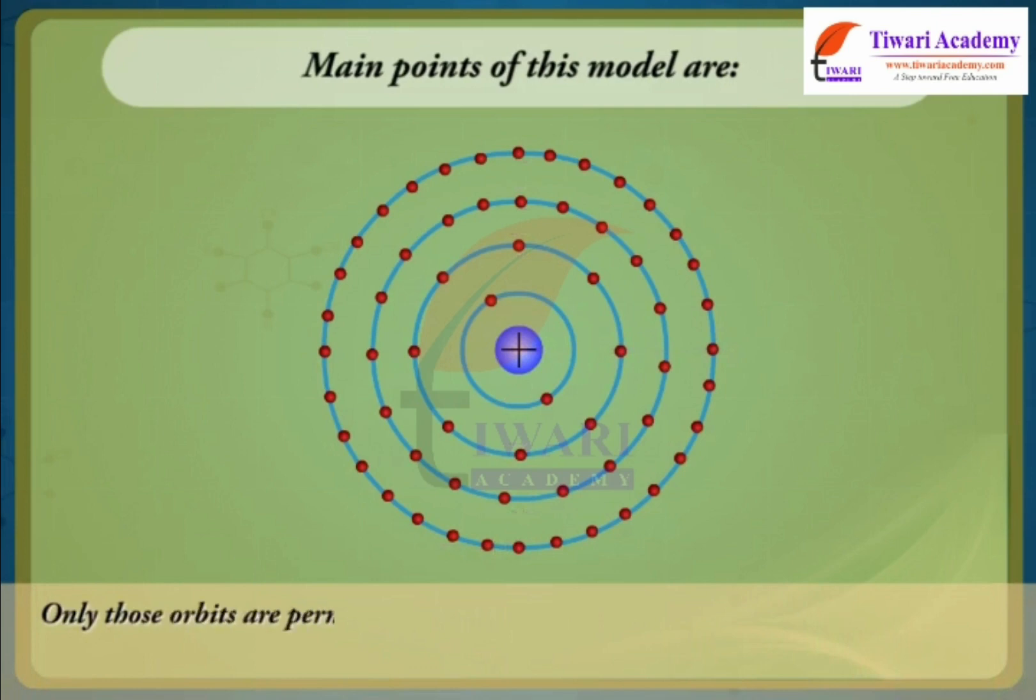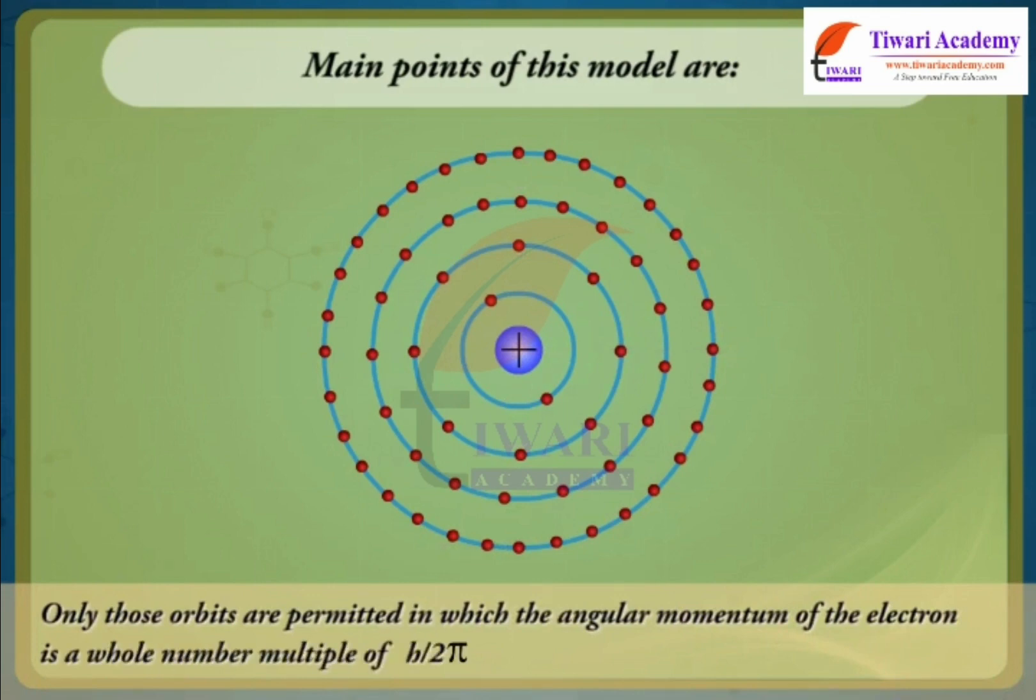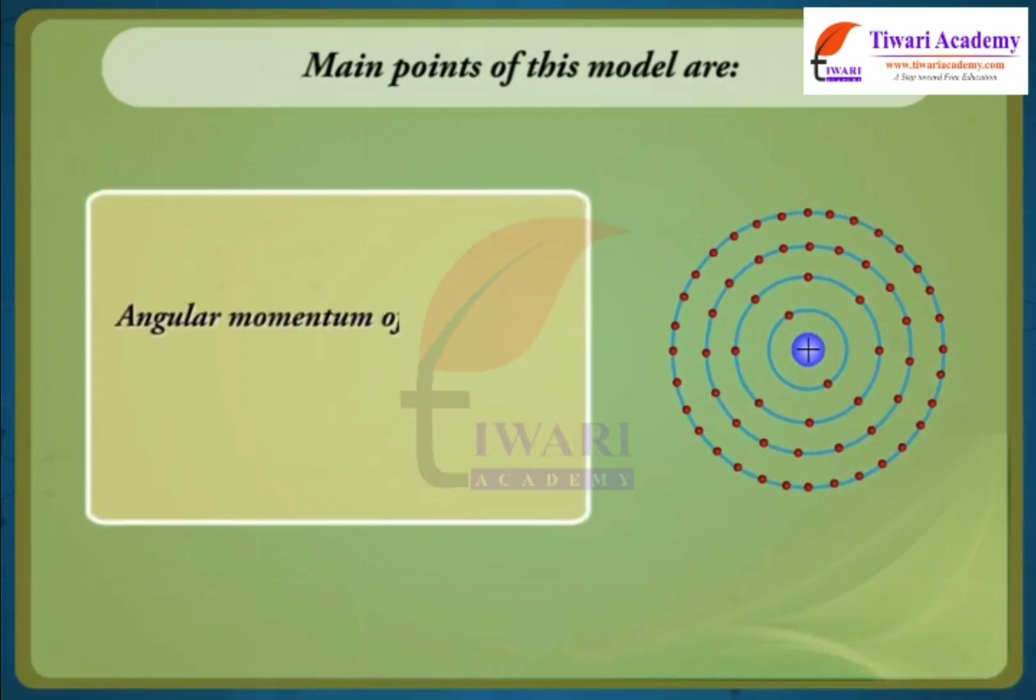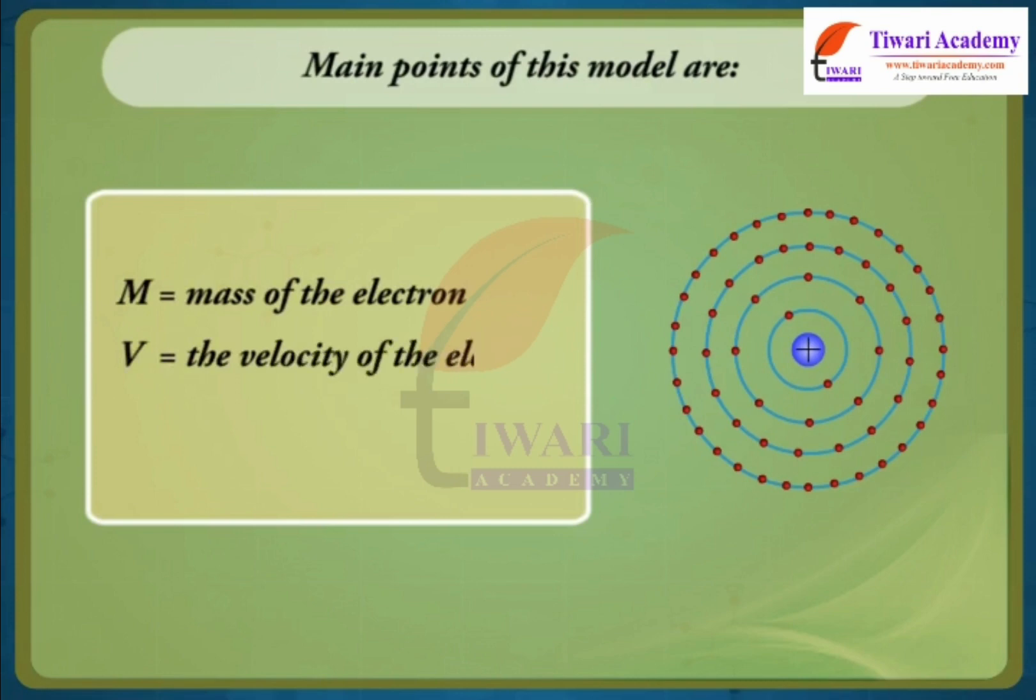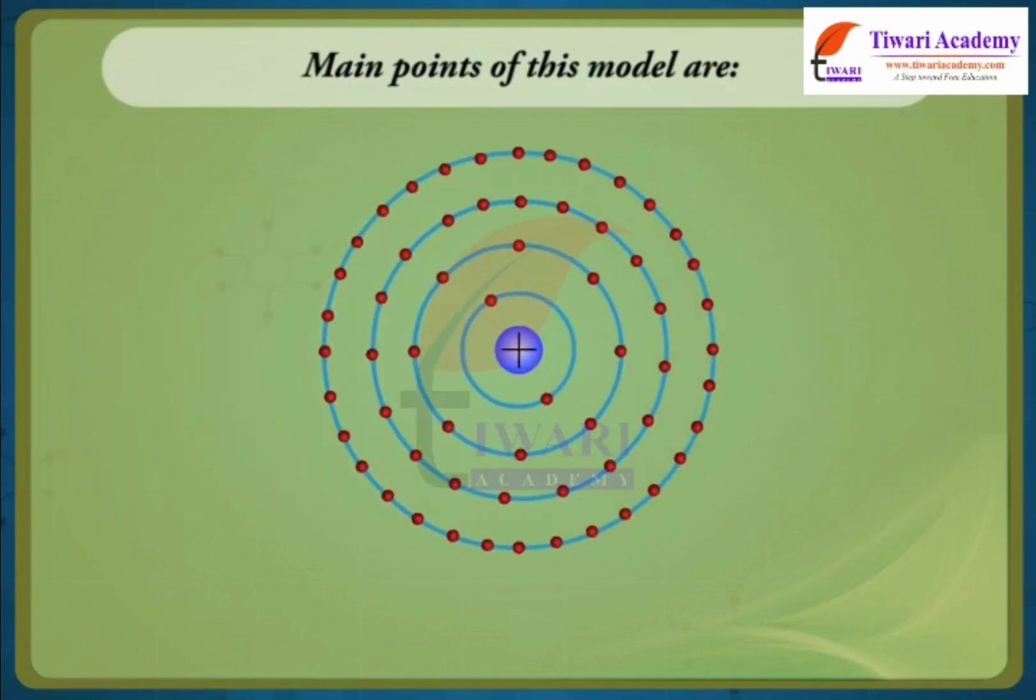Only those orbits are permitted in which the angular momentum of the electron is a whole number multiple of H upon 2π where H is the Planck's constant. That is, angular momentum of the electron, M, V, R is equal to NH by 2π where N is equal to 1, 2, 3. Where M is the mass of the electron, V is the velocity of the electron and R is the radius of the orbit. In other words, angular momentum of electron in an atom is quantized.